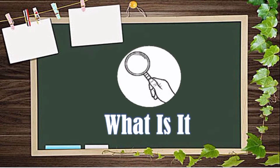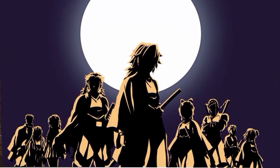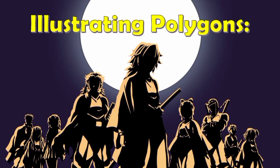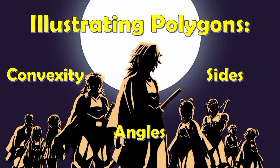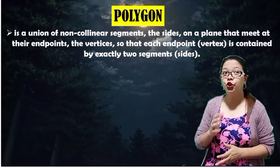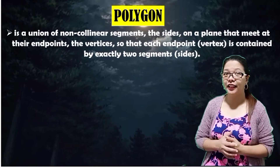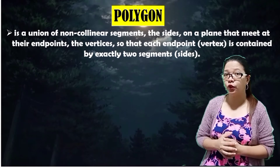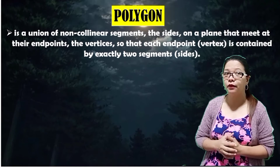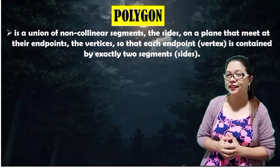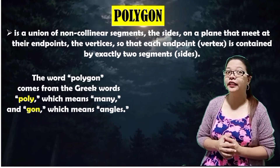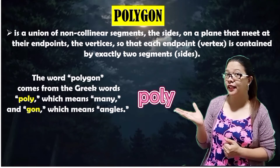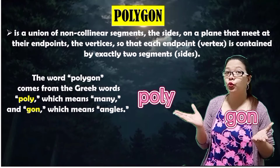What is it? Illustrating Polygons — we will define and illustrate its convexity, angles, and sides. A polygon is a union of non-collinear segments, the sides, on a plane that meet at their endpoints, the vertices, so that each endpoint, which is the vertex, is contained by exactly two segments, which are the sides. The word polygon comes from the Greek words poly, which means many, and gon, which means angles.